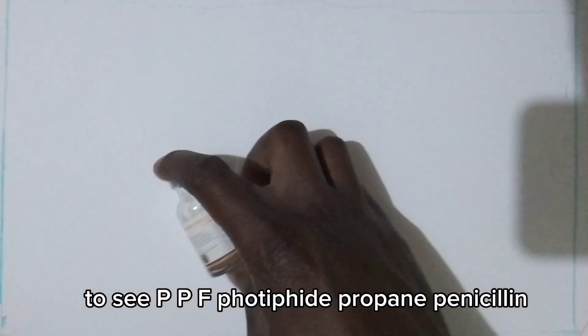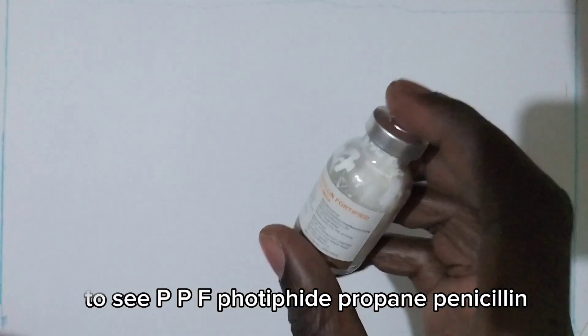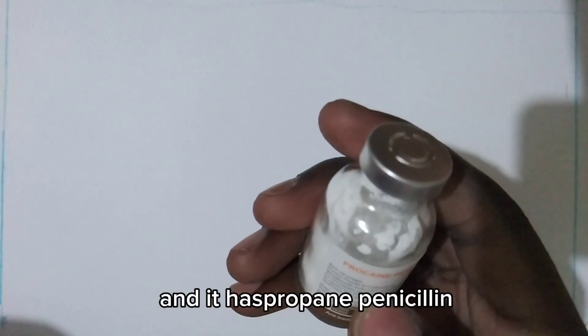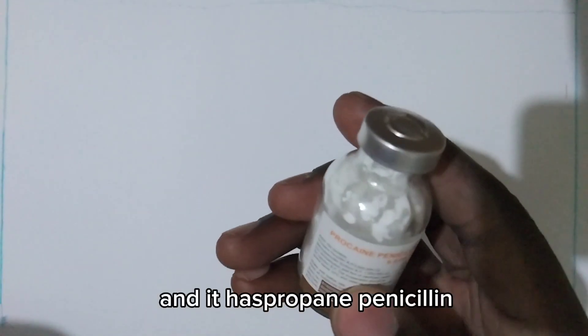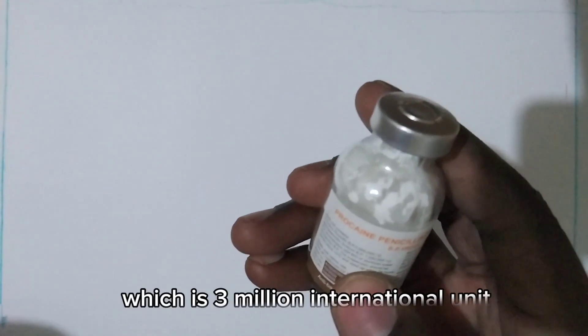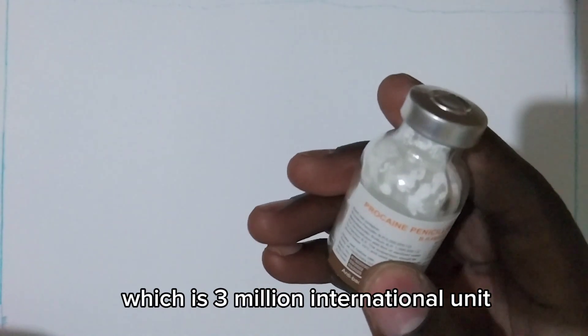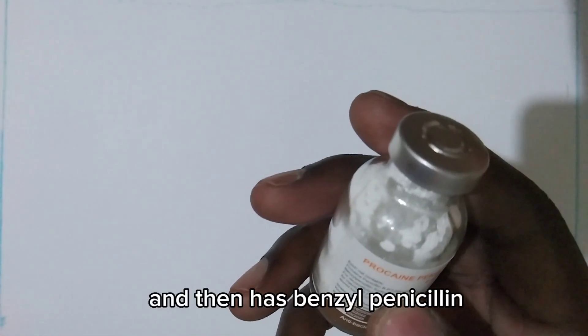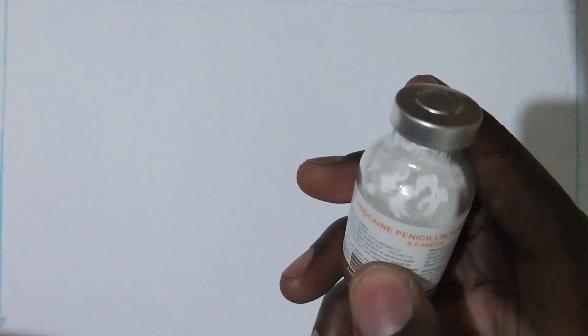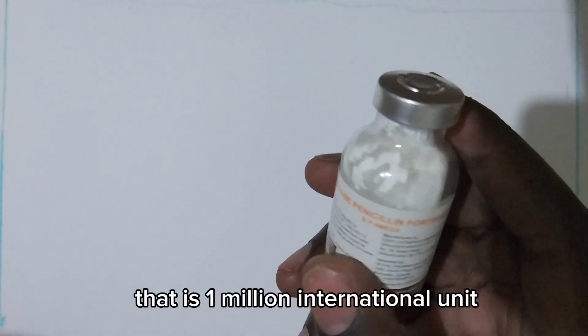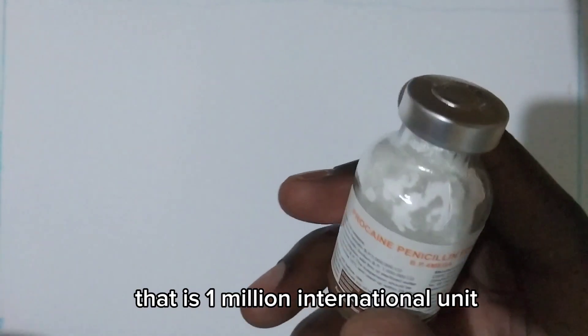This is CPPF, Procane Penicillin. It has Procane Penicillin which is 3 million international units and then has Benzyl Penicillin that is 1 million international units.